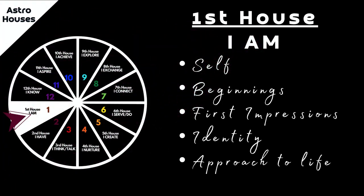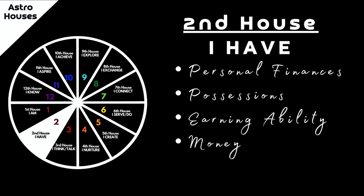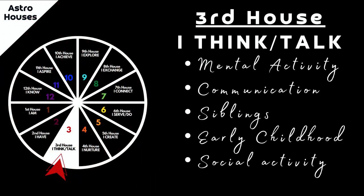Your first house: any alignments here reflect the area of I am — self, beginnings, your first impressions, your identity, your ego, and your approach to life. The second house is the area of your life — I have. What do I have? Personal finances, possessions, your earning ability, money. The third house is going to refer to the area of your life where you're thinking and learning to communicate — your mental activity, communication, siblings, early childhood, social activity.